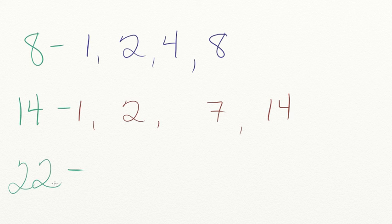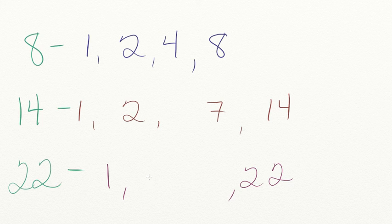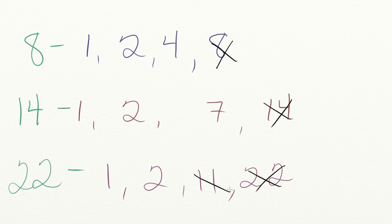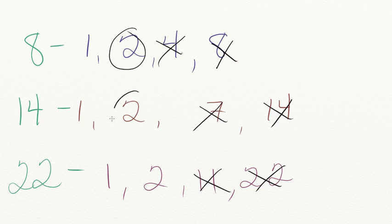For the number 22: we can multiply 1 times 22, and 2 times 11. Now we've listed all of the factors for each of these numbers, and we need to find the greatest common factor they all share. They do not share 8, 14, or 22 as a factor. They do not share 11, 7, or 4 as a factor. But they do share 2, so the greatest common factor of 8, 14, and 22 is 2.